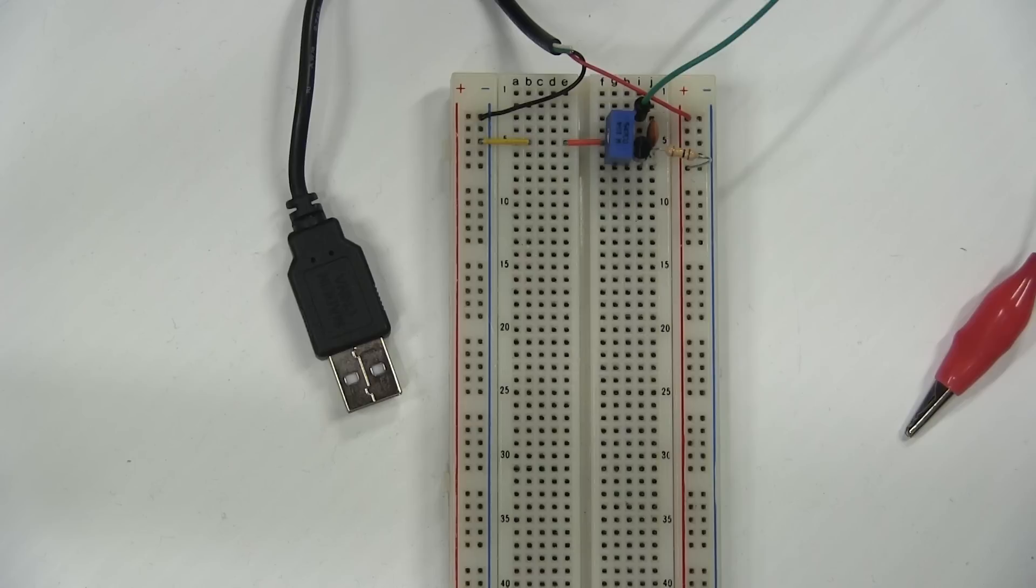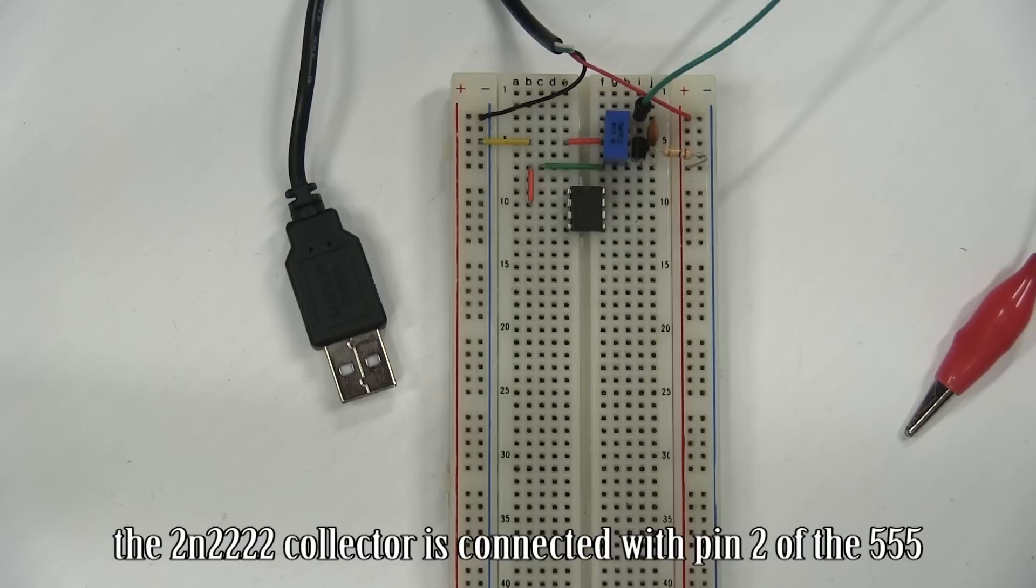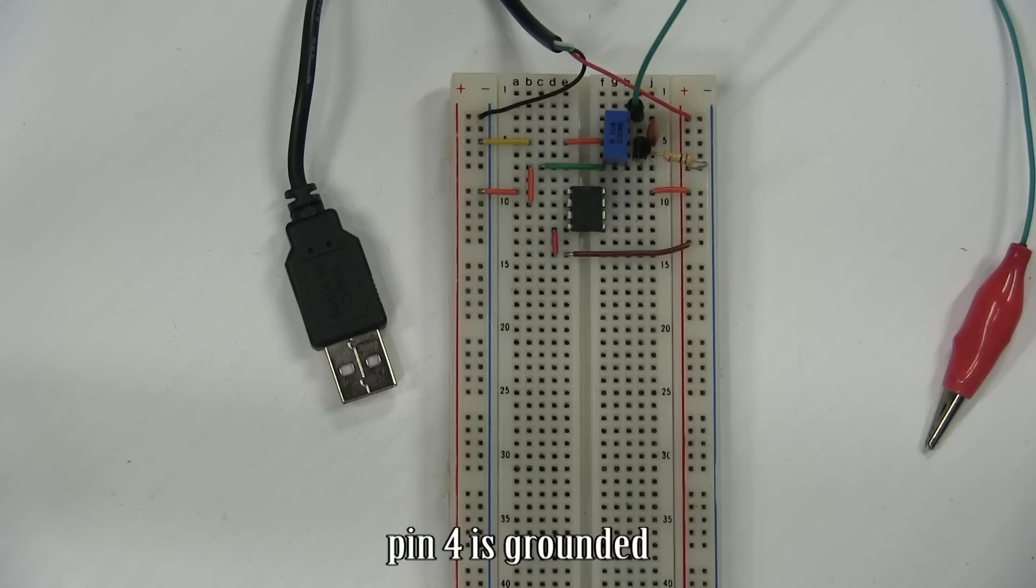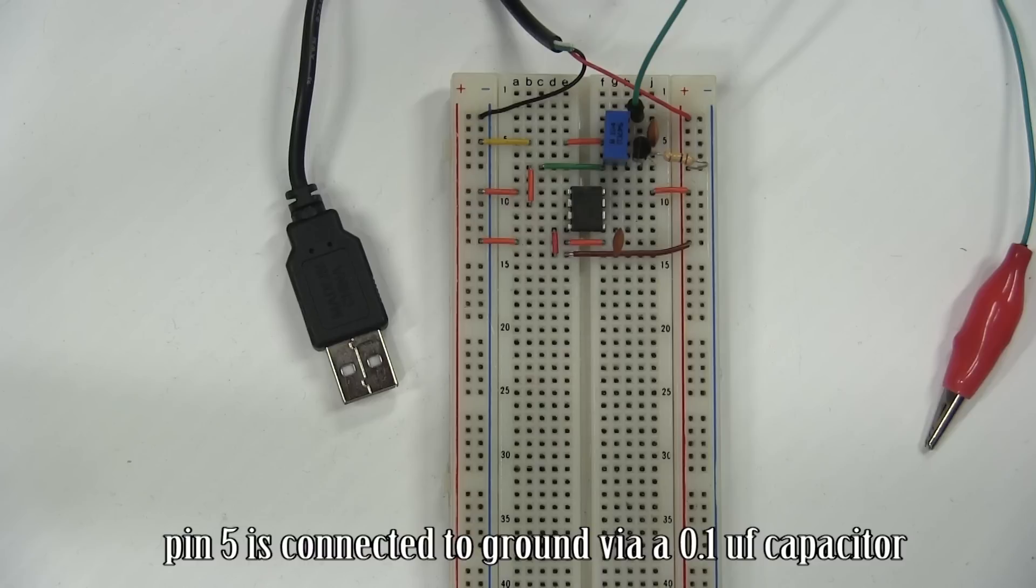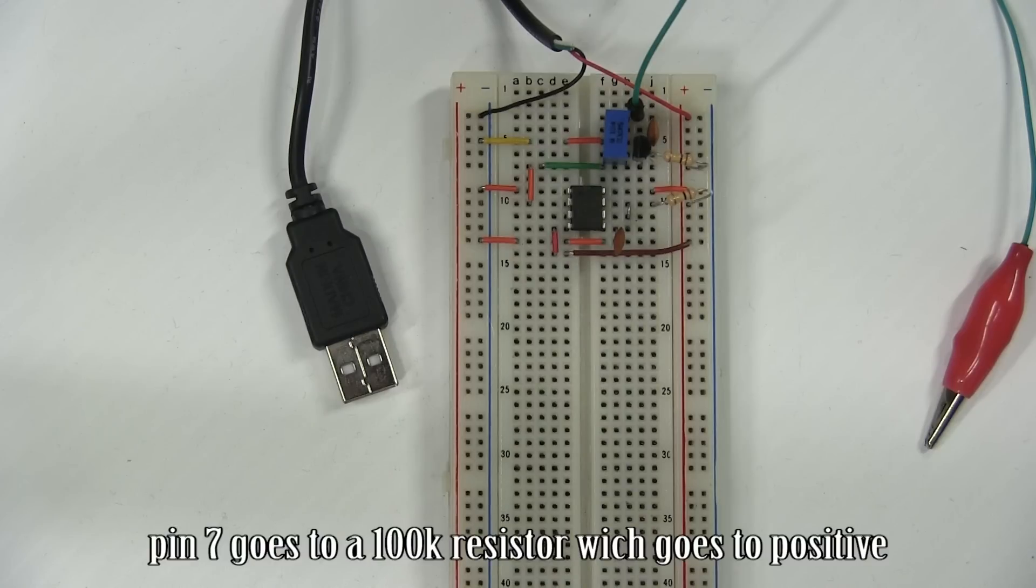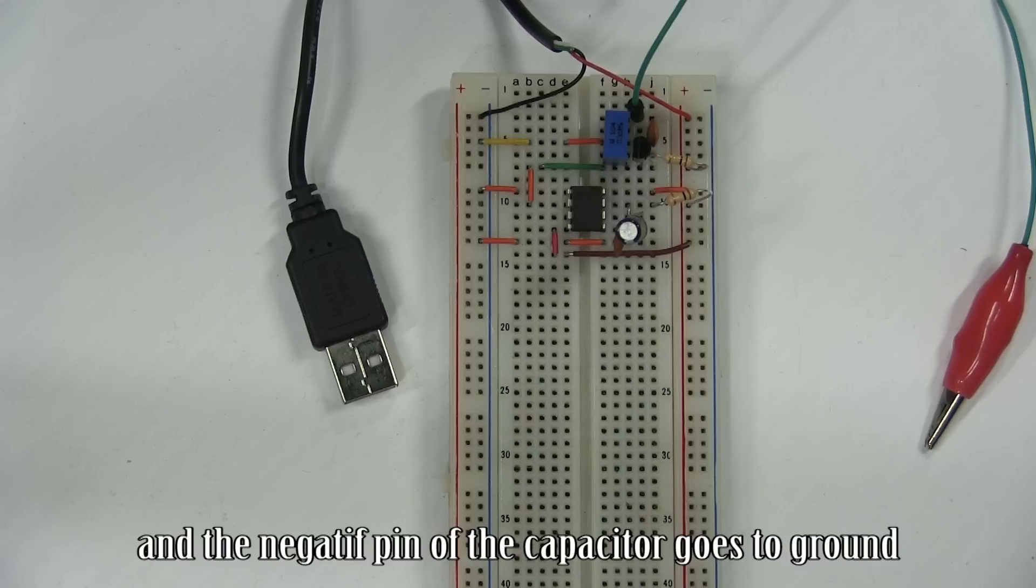Place the 555 timer chip. The 2N2222 collector is connected with pin 2 of the 555. Power on the timer chip. Pin 4 is grounded. Pin 5 is connected to ground via a 0.1 microfarad capacitor. Pin 6 and 7 are together. Pin 7 goes to a 100k resistor which goes to positive. Connect pin 6 to a 10 microfarad capacitor and the negative pin of the capacitor goes to ground.